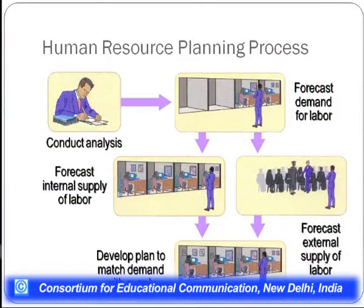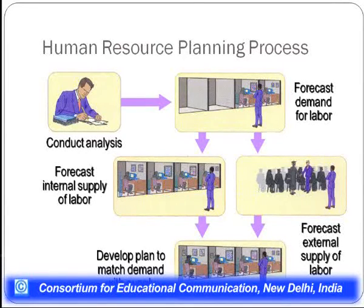Human resource management is all about attracting good human resources into the organization and having an effective way to retain them. Under this we have to do certain planning. The first step is to conduct an analysis where we do forecasting about how much labor you need. There are two types of forecasting: internal supply of labor and external supply of labor. Then you develop a plan in which matching is done between demand and supply so that organizational needs can be met. This is the human resource planning process.